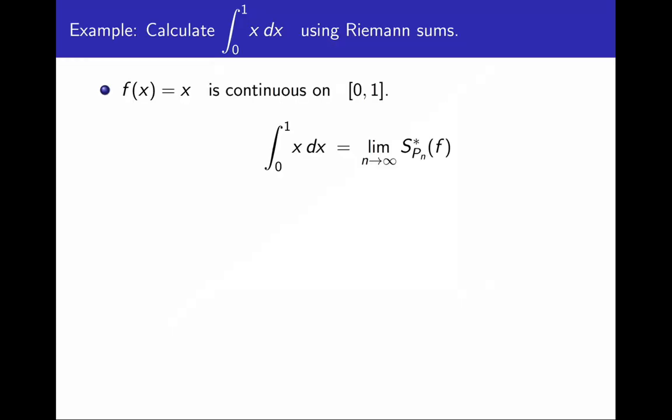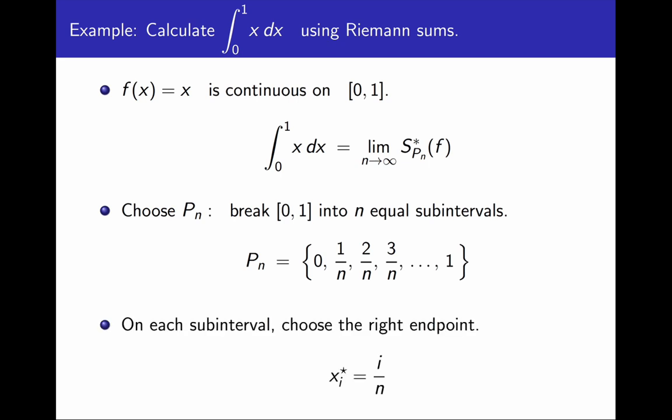Okay, then. I am going to choose as the partition Pₙ the one that breaks the interval into n equal subintervals. I can write this partition explicitly. It consists of the points 0, 1/n, 2/n, 3/n, and so on, all the way to 1. And on each subinterval, I am going to choose the right endpoint to make the algebra simpler.